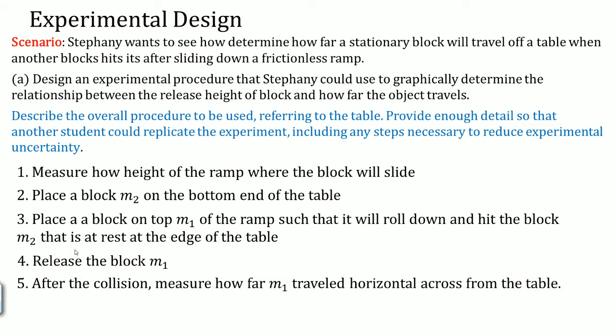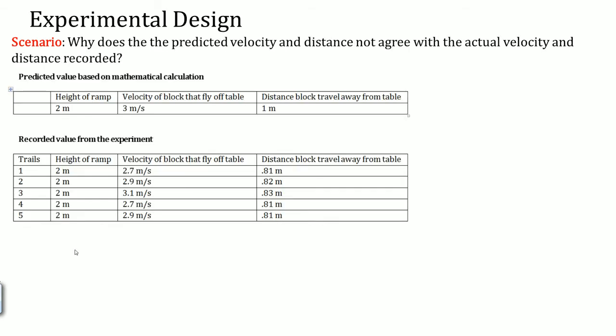Four, release the block. Then it's going to hit, then the block's going to fly out. After the collision, you're going to measure how far M1 traveled across the table or measure the time. Six, you're going to repeat steps two to five, because those are the experimental steps for the collision, multiple times to reduce error. I recommend ten times.